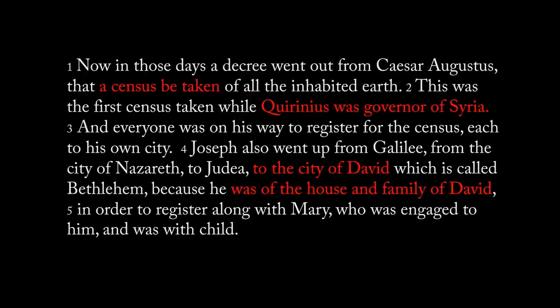Let's start with Luke chapter 2. 'Now in those days a decree went out from Caesar Augustus that a census be taken of all the inhabited earth. This was the first census taken while Quirinius was the governor of Syria, and everyone was on his way to register for the census, each to his own city. Joseph also went up from Galilee, from the city of Nazareth to Judea, to the city of David, which is called Bethlehem, because he was of the house and family of David, in order to register along with Mary, who was engaged to him and was with child.'